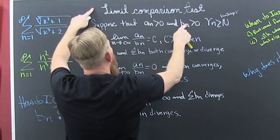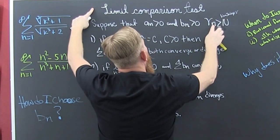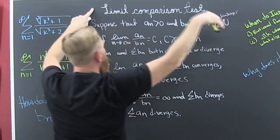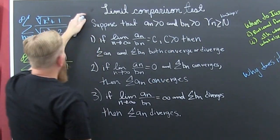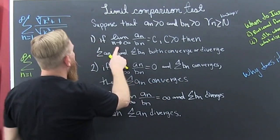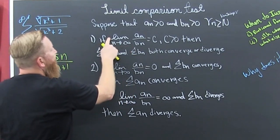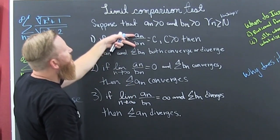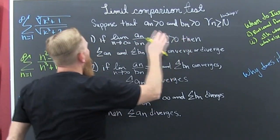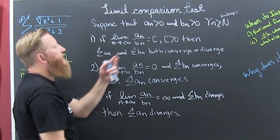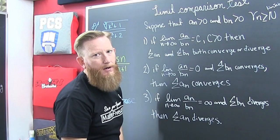We're gonna suppose that these two sequences are positive, and that is for all little n's bigger than big N, where big N is some integer way out — we're talking about the tail. If the limit as n goes to infinity of the quotient of a_n and b_n is some number, then both the series of a_n and the series of b_n both converge or they both diverge.